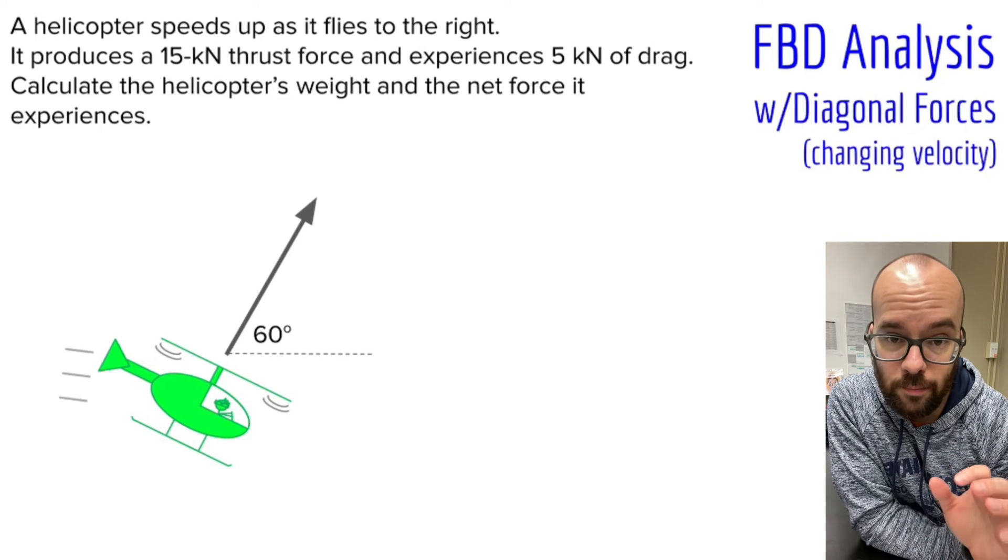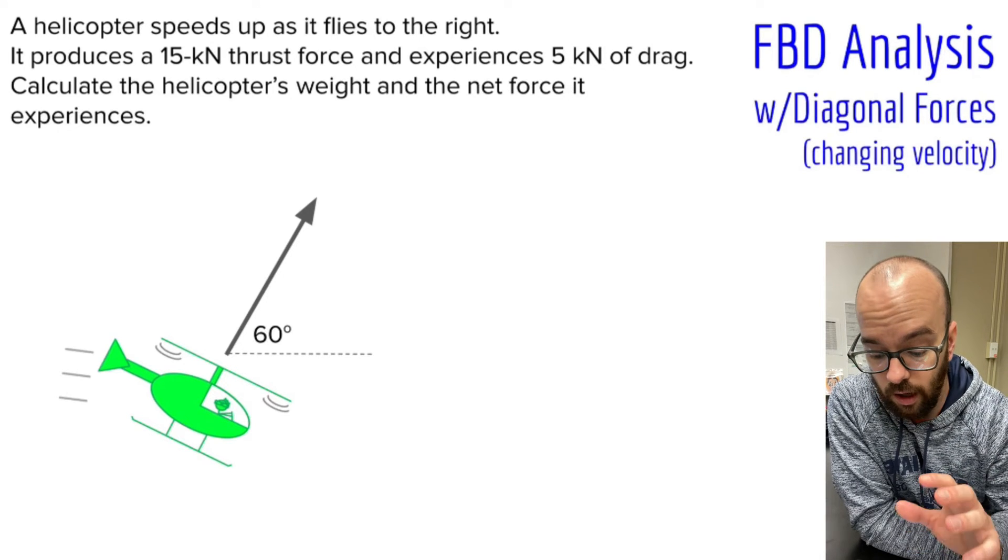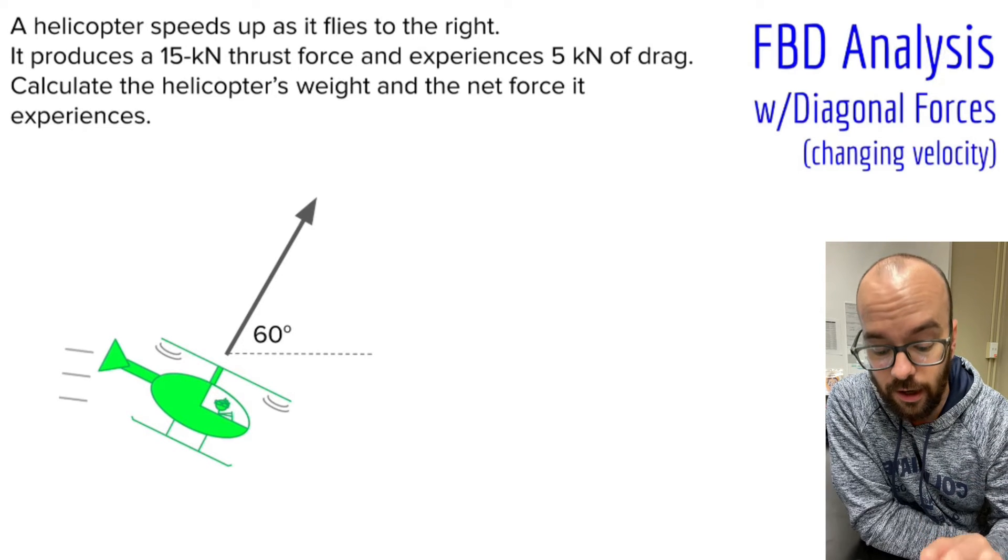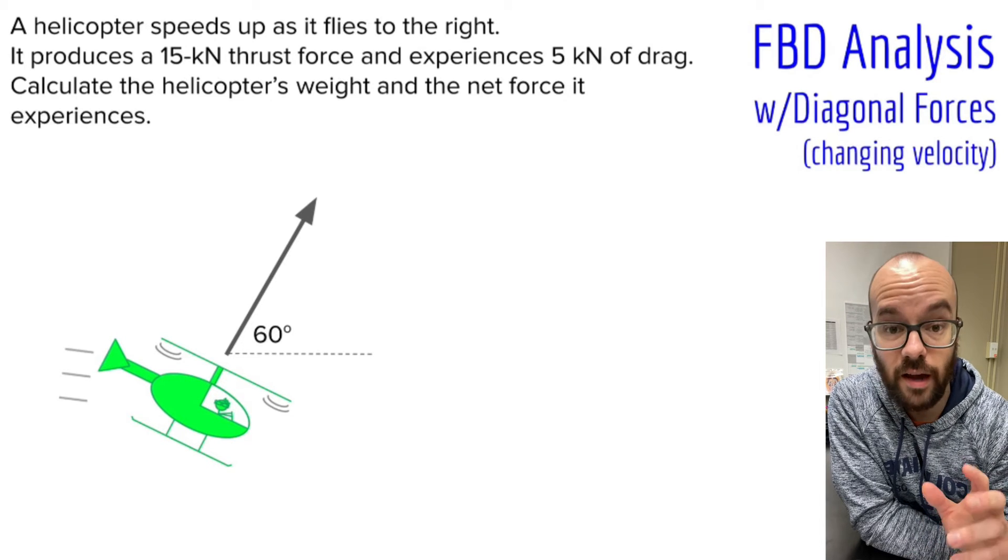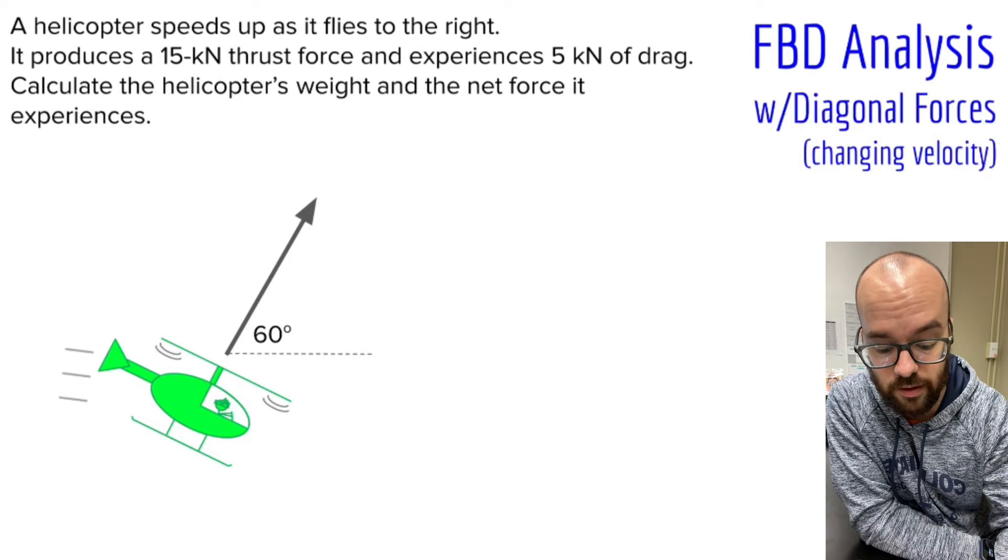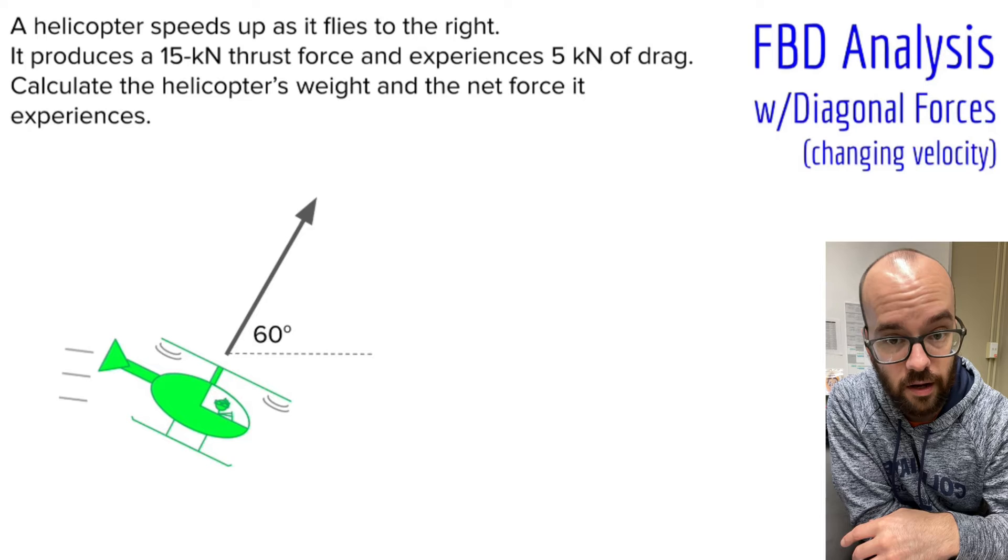In this example problem, we're going to do free body diagram analysis of a helicopter flying through the air. It involves a diagonal force and a changing velocity. I did a similar video introducing this. This is a second example, this time with something changing velocity instead of constant velocity.